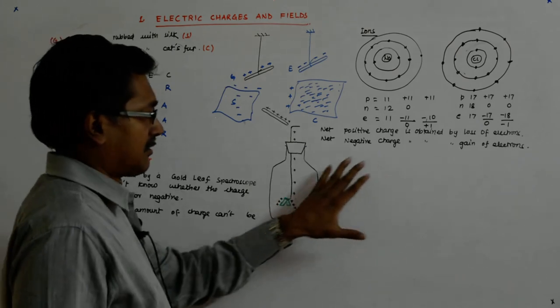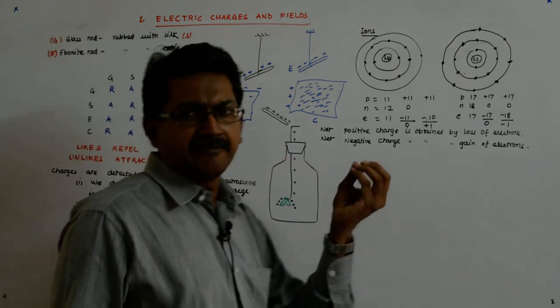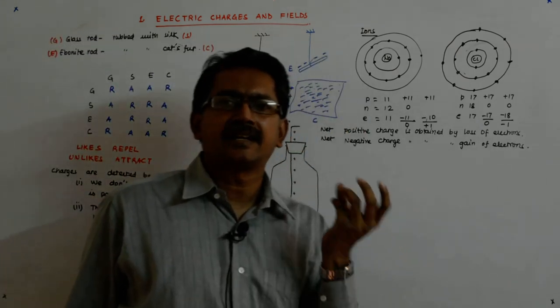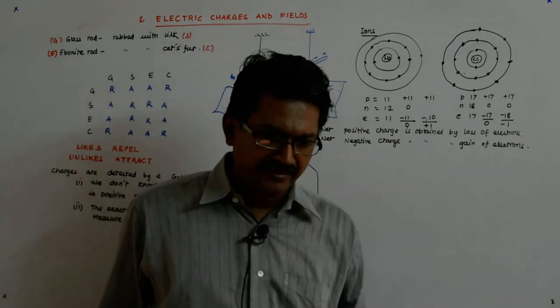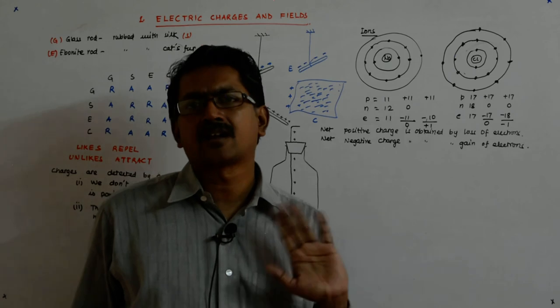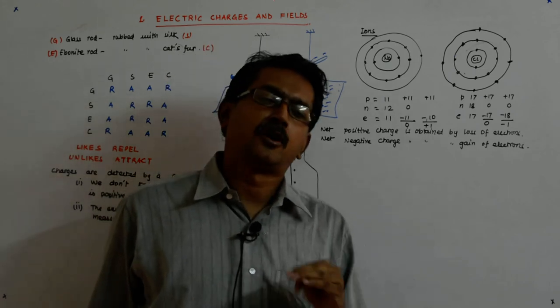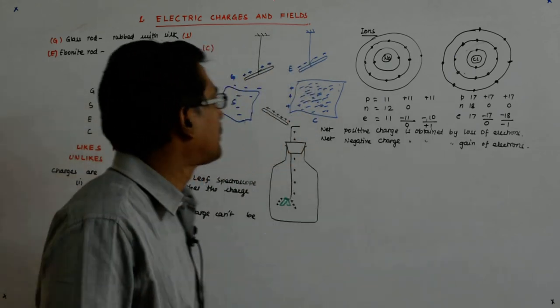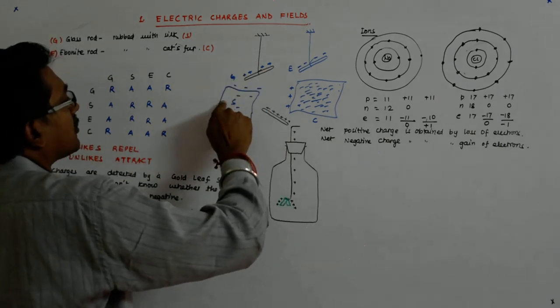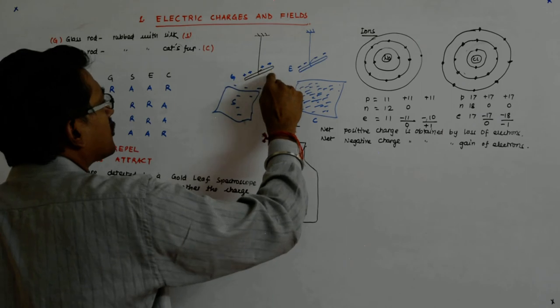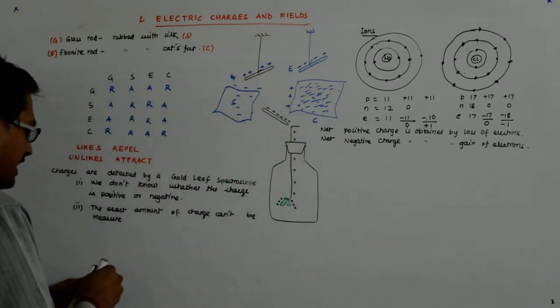It is the very light and loosely bound electrons which are otherwise in motion, which are responsible for a positive or negative charge. So what must have happened here in the glass rod when the silk cloth was rubbed?